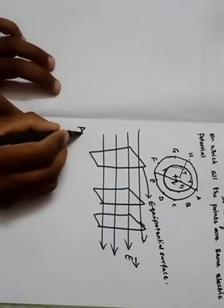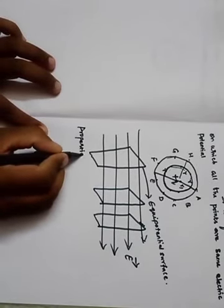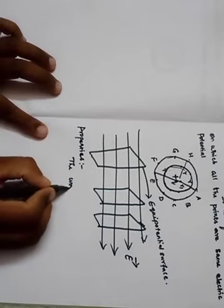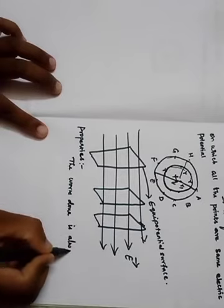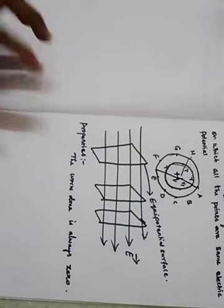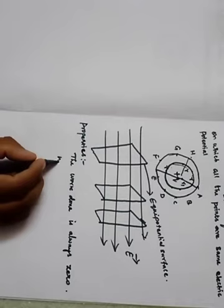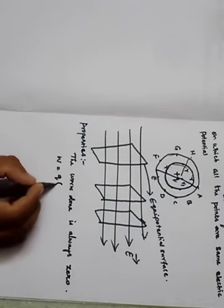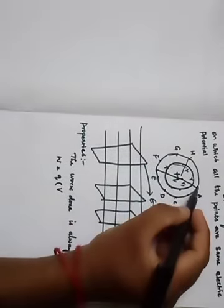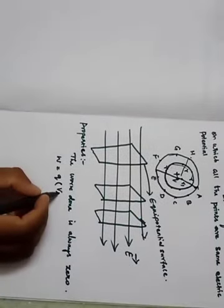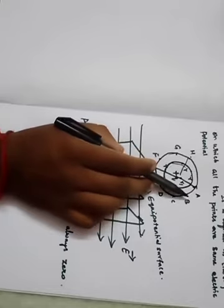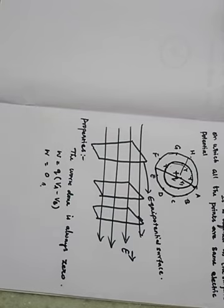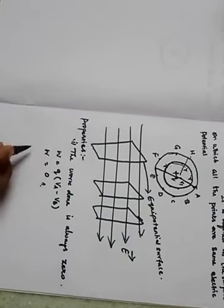Now we discuss the properties of the equipotential surface. First: the work done on an equipotential surface is always zero. This is because work done is calculated using the formula W = q(Va − Vb). For an equipotential surface, the electric potential at point A and at point B are the same, so Va − Vb = 0, making the work done always zero.